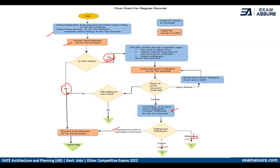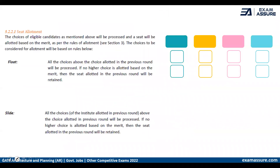Let us look in detail at what float, slide, and surrender mean. Taking the first example of float: to understand this, let us say there are four institutes — A, B, C, and D — and in these institutes there are different branches that you have applied for.